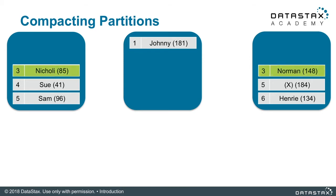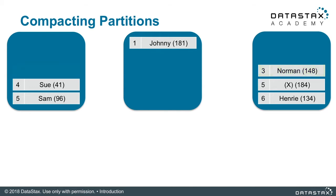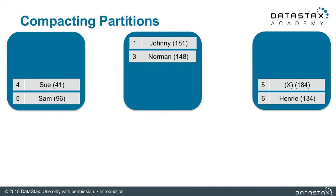Row three has Nikolai on the left. Nikolai wanted to change his name to Norman later on the right. So Nikolai on the left with the timestamp of 85 is less than the 148 on the right. When Cassandra reads from these two files, it will return the value of Norman on the right because it has a later timestamp. However, we need to get rid of the old stale data.